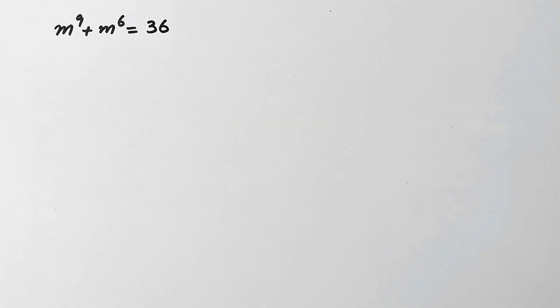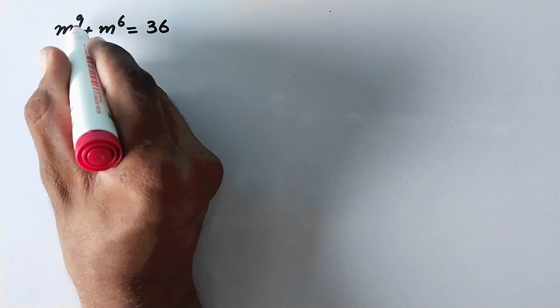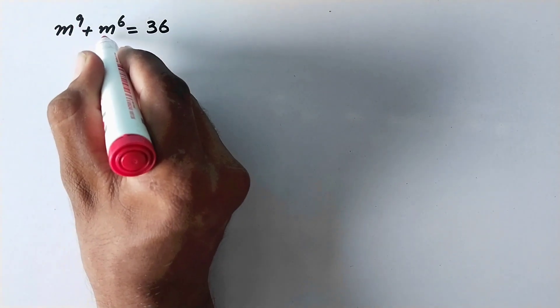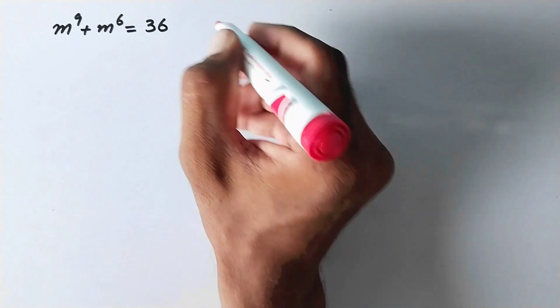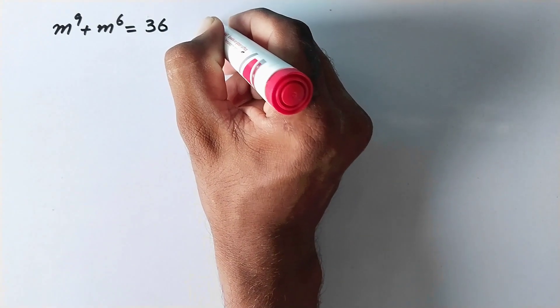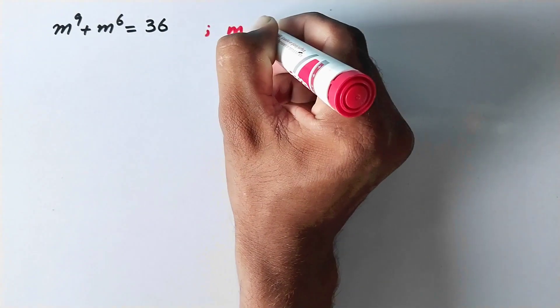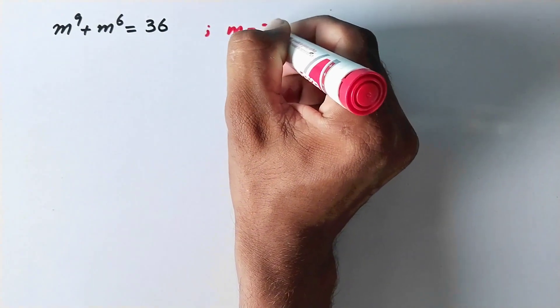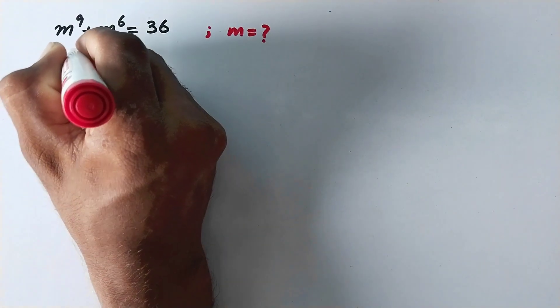Hello everyone, welcome to Explored Maths. Today we are going to solve the question: m raised to the power 9 plus m raised to the power 6 is equal to 36, and we have to find the value of m. Let us see the solution.